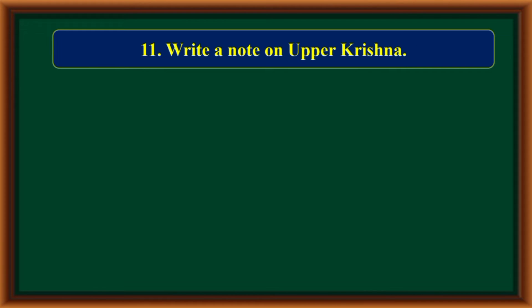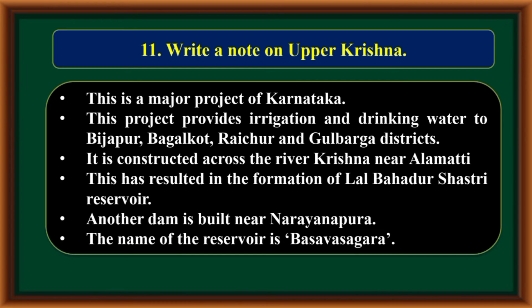Write a note on Upper Krishna Project. This is a major project of Karnataka. It provides irrigation and drinking water to Bijapur, Bagalkot, Raichur, and Gulbarga districts. It is constructed across the River Krishna near Almatti, resulting in the formation of Lal Bahadur Shastri Reservoir. Another dam is built near Narayanpura, with the reservoir named Basava Sagara.